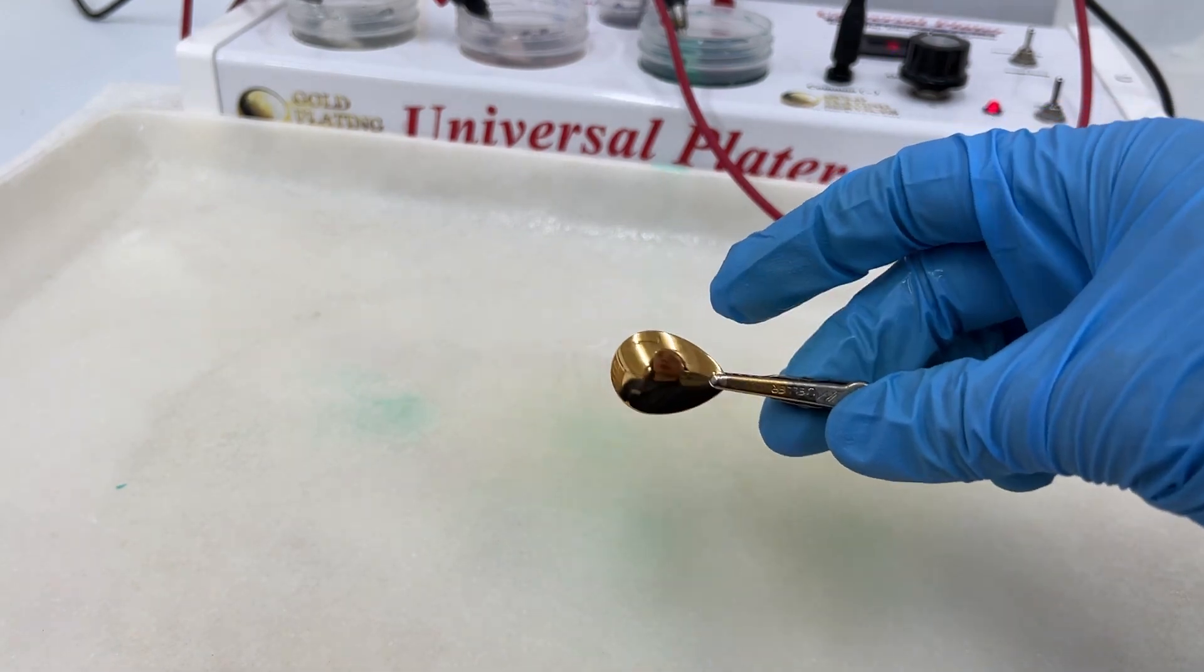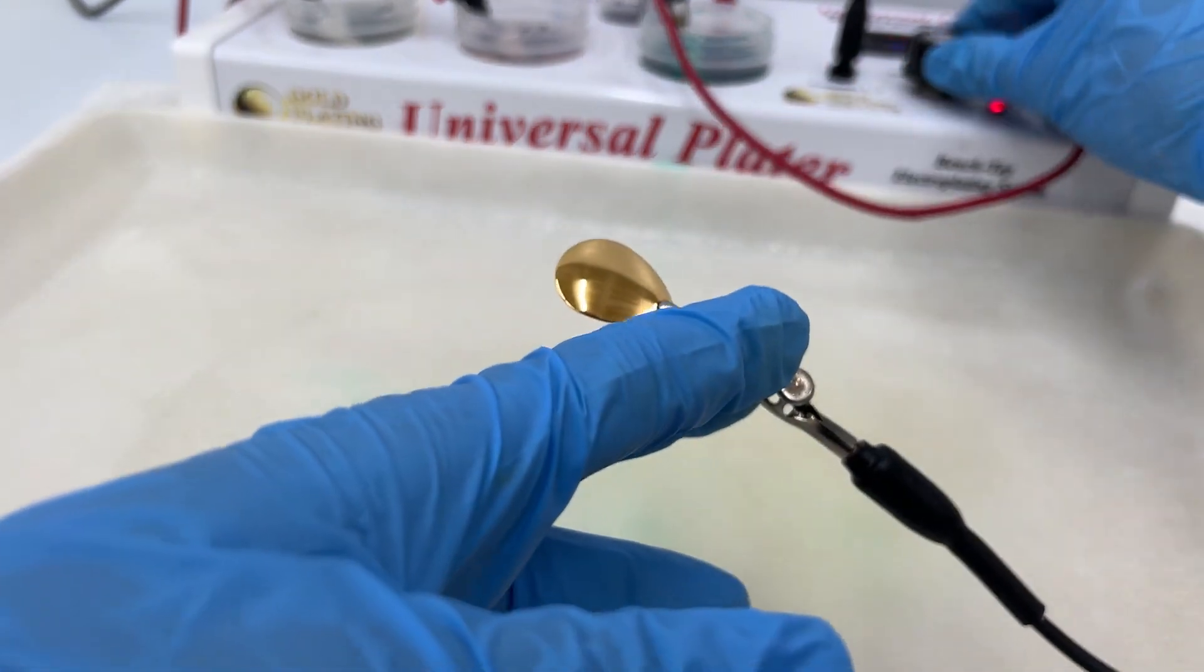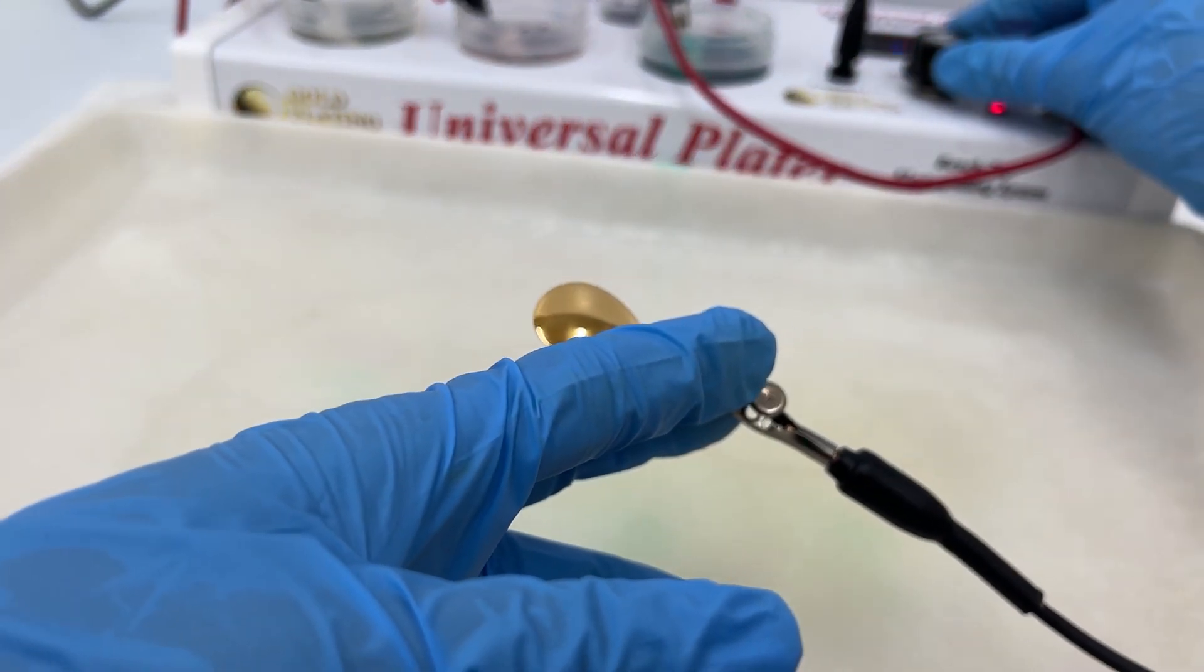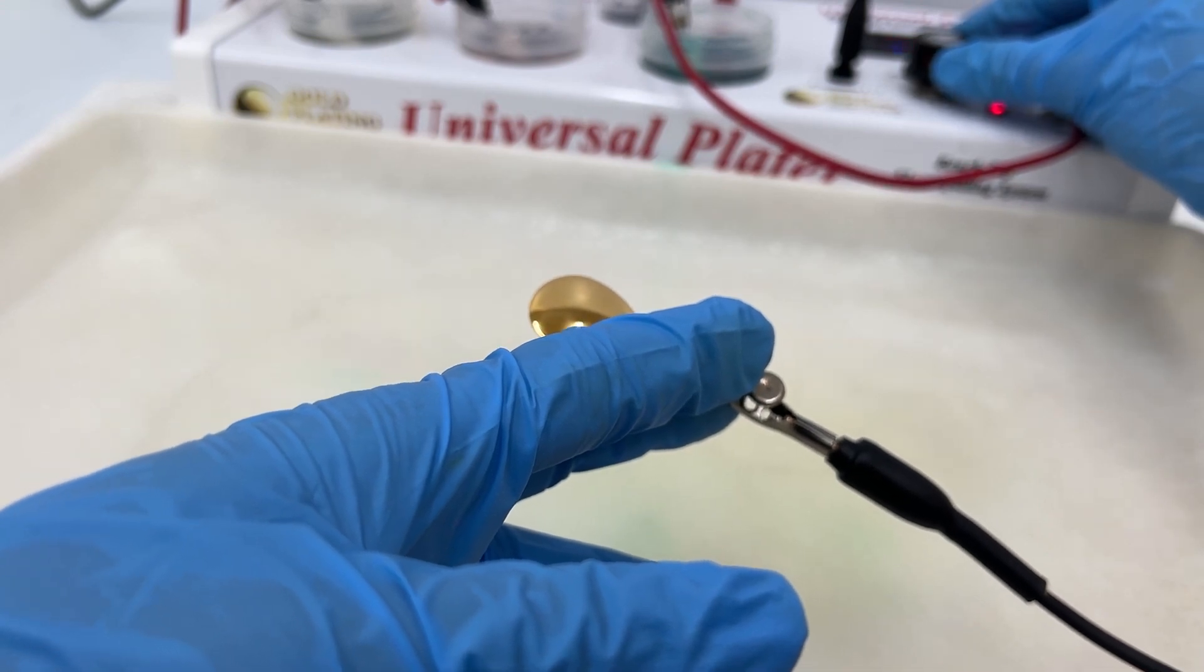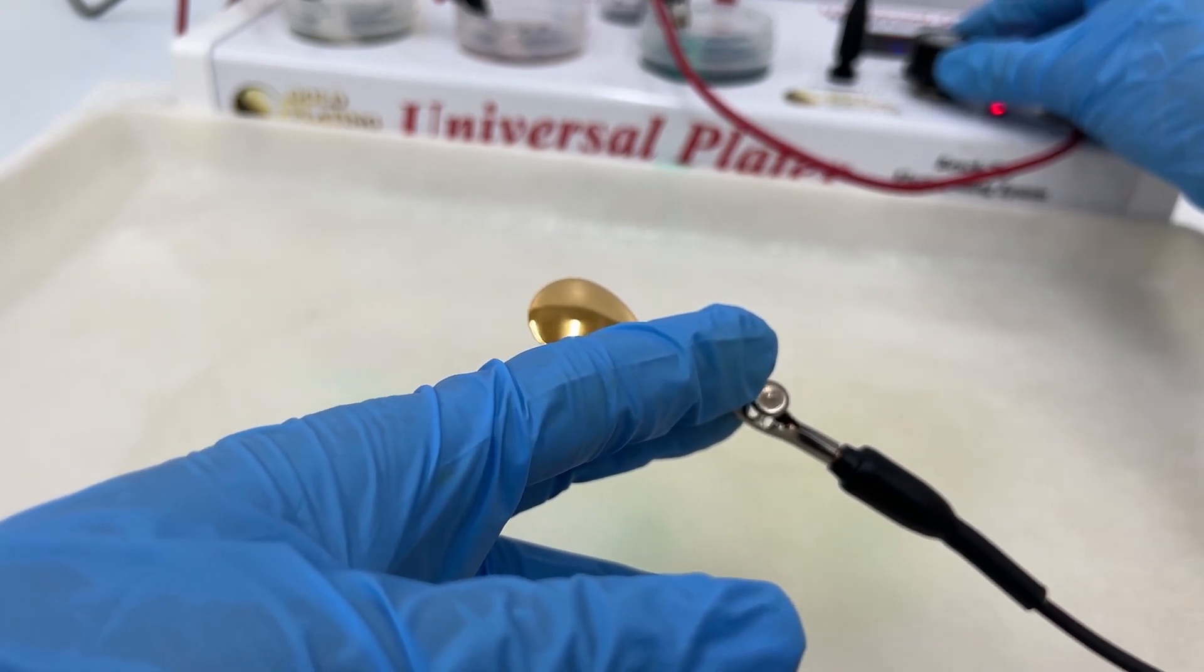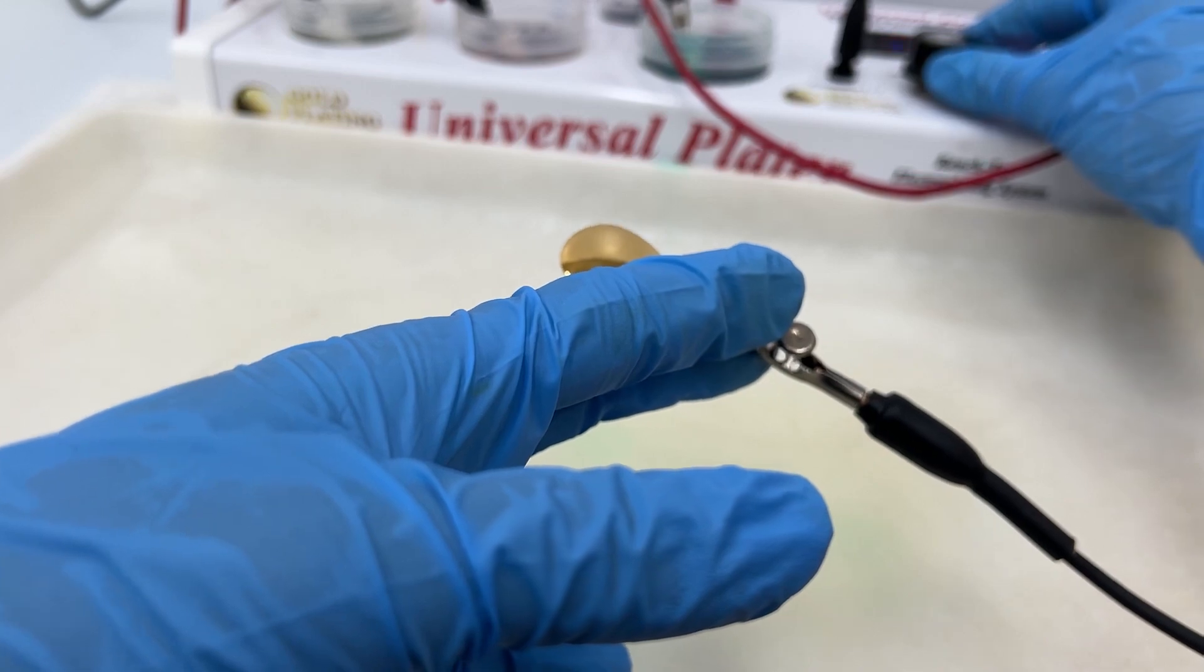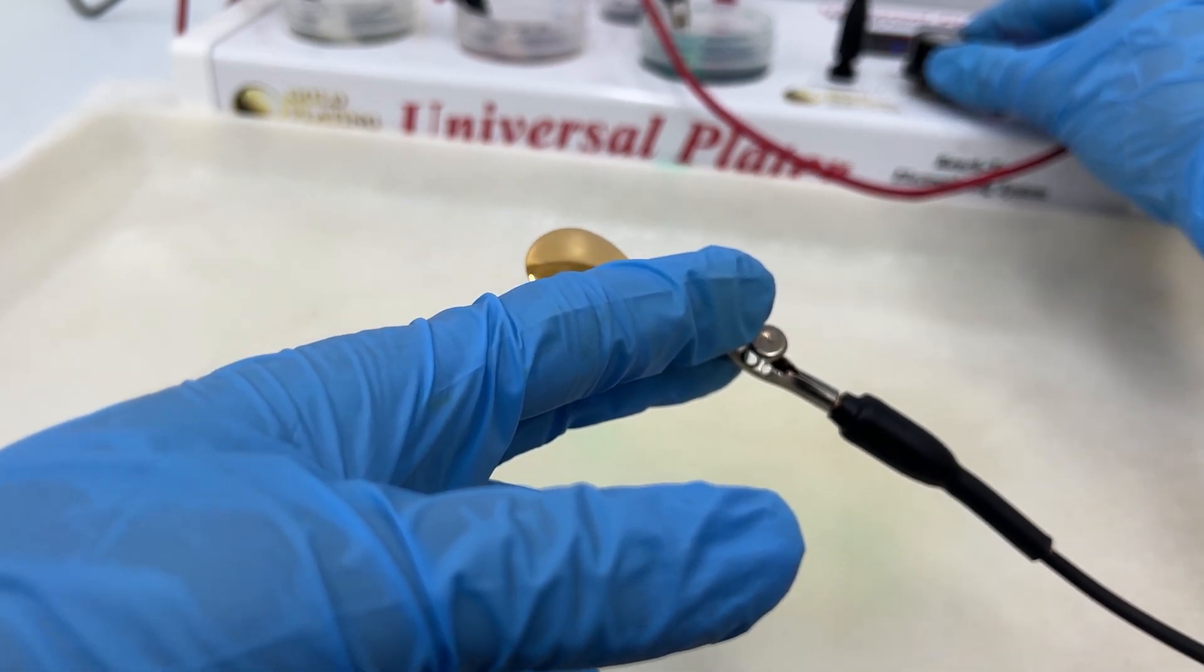I'm going to show you how to use our brush plate nickel really fast. First, we need to turn our machine up to about six volts when we're using the electro clean and the surface activator.